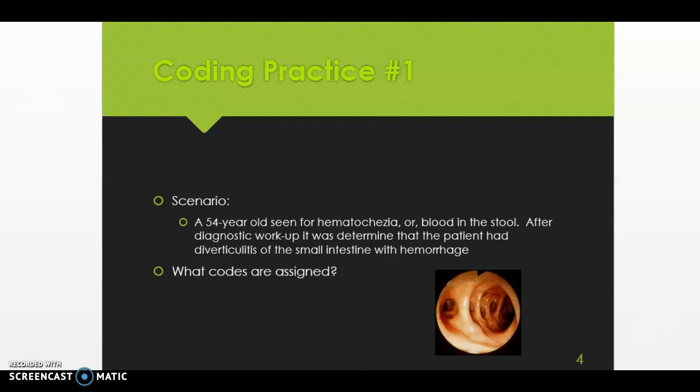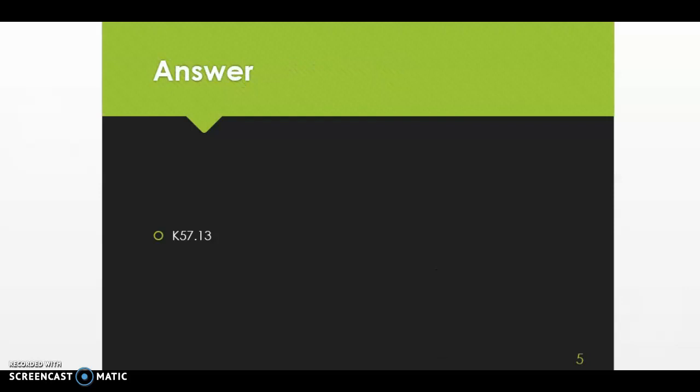Once you get to diverticulitis, we're going to go down to intestine and then small, and then you'll notice we can pick with bleeding. Once you find that code, verify in the tabular.